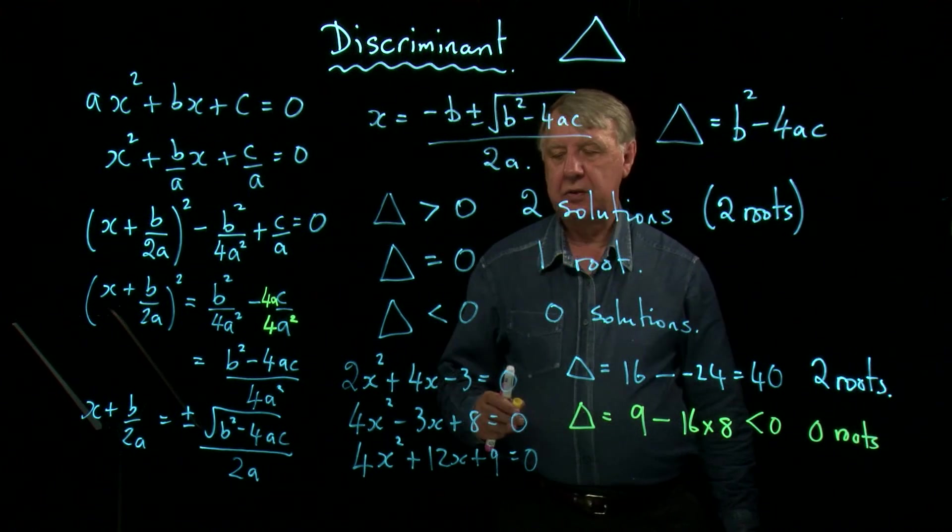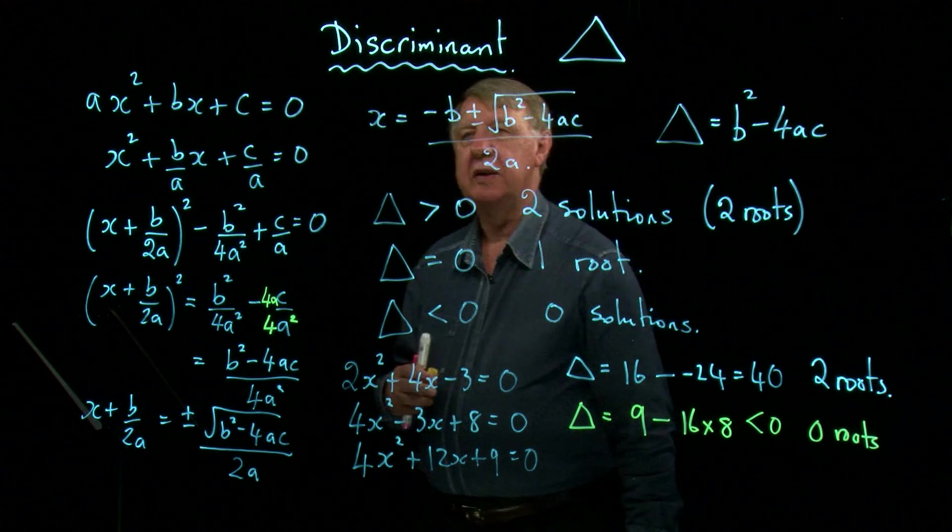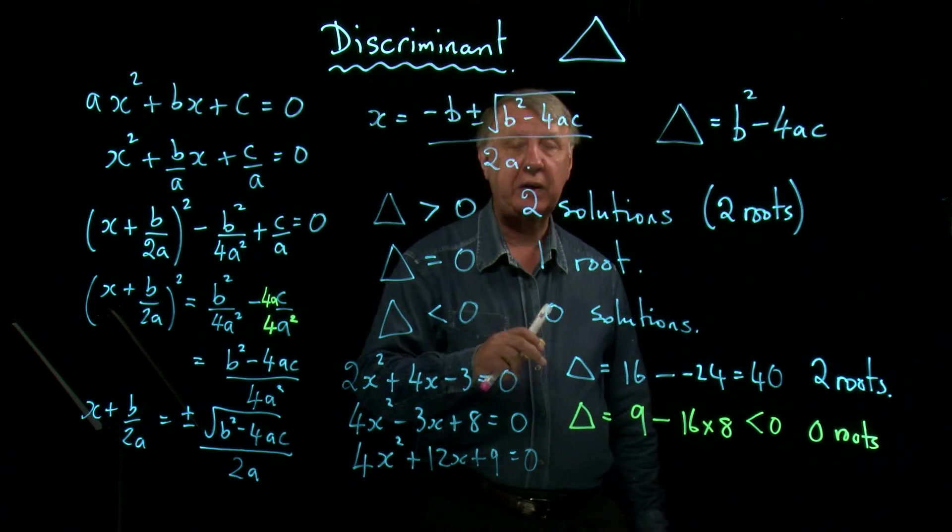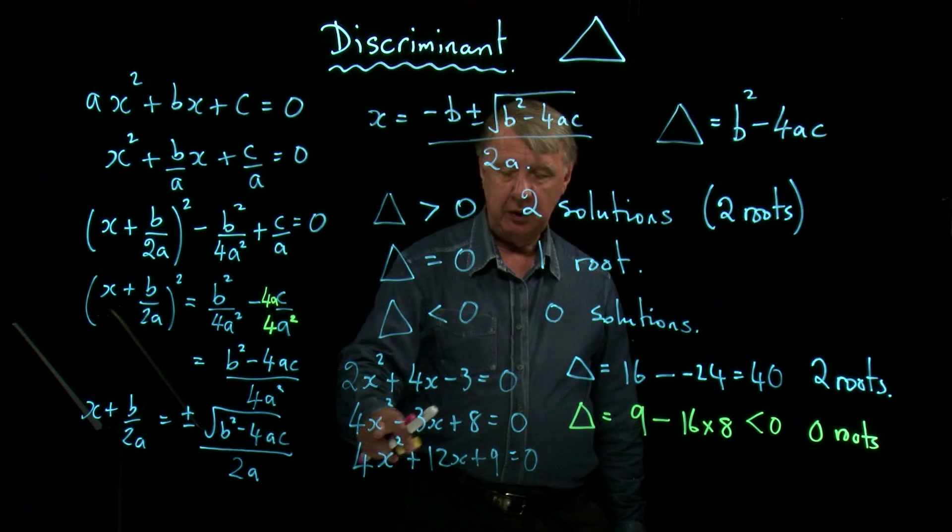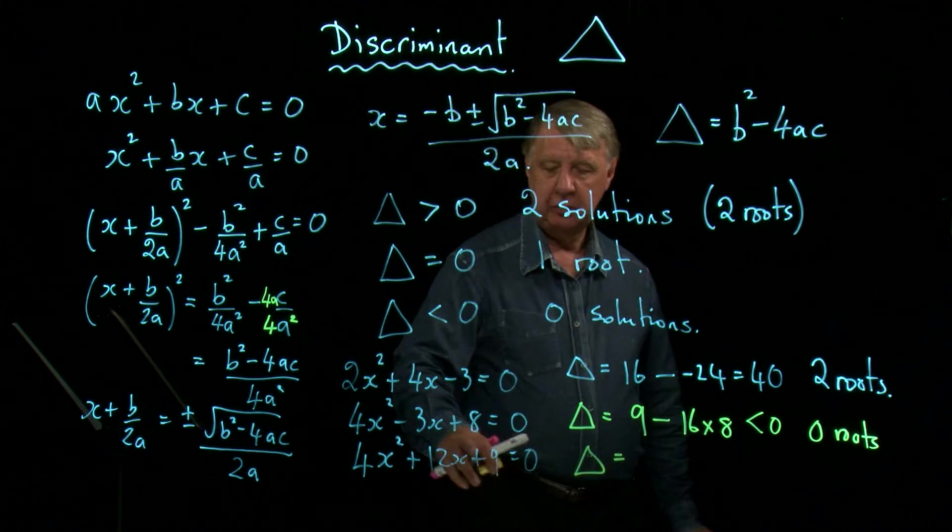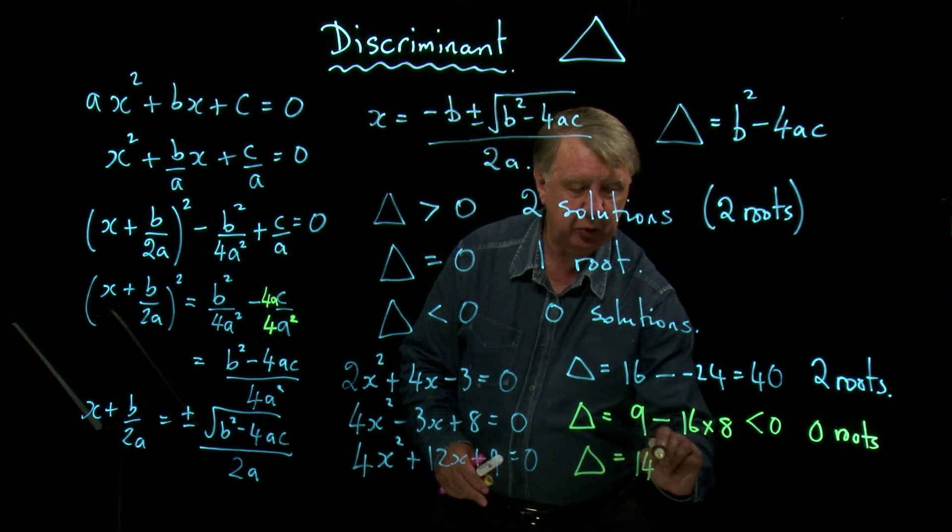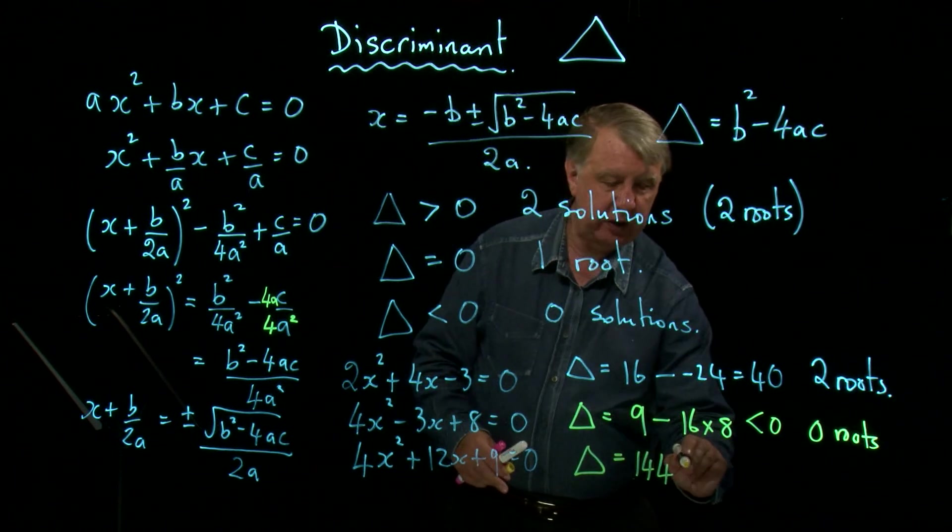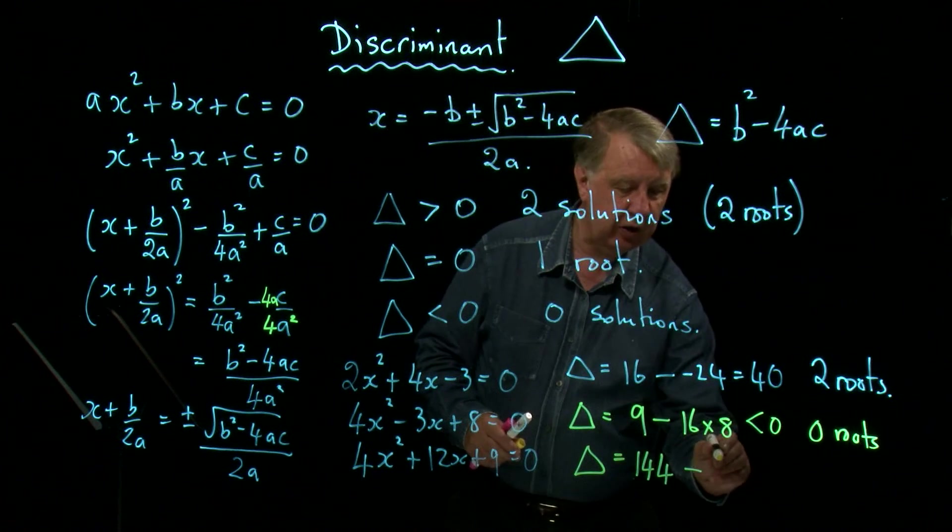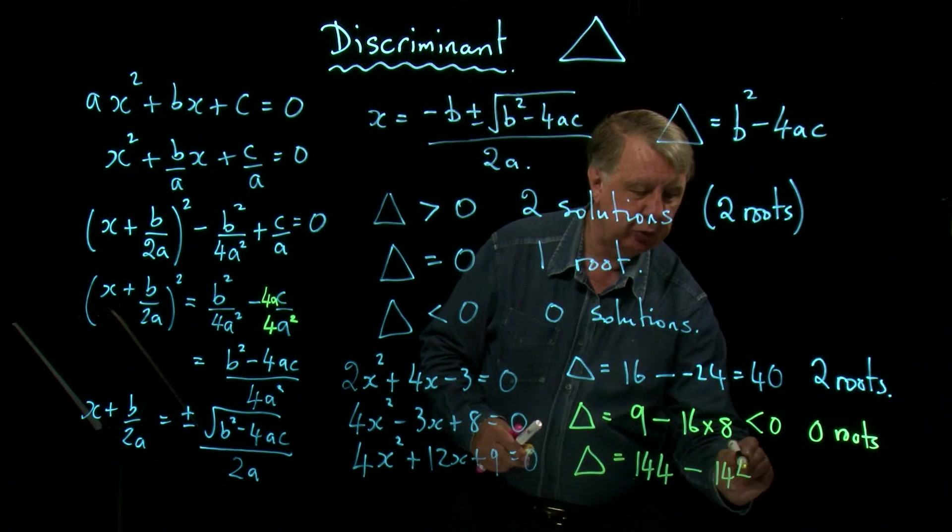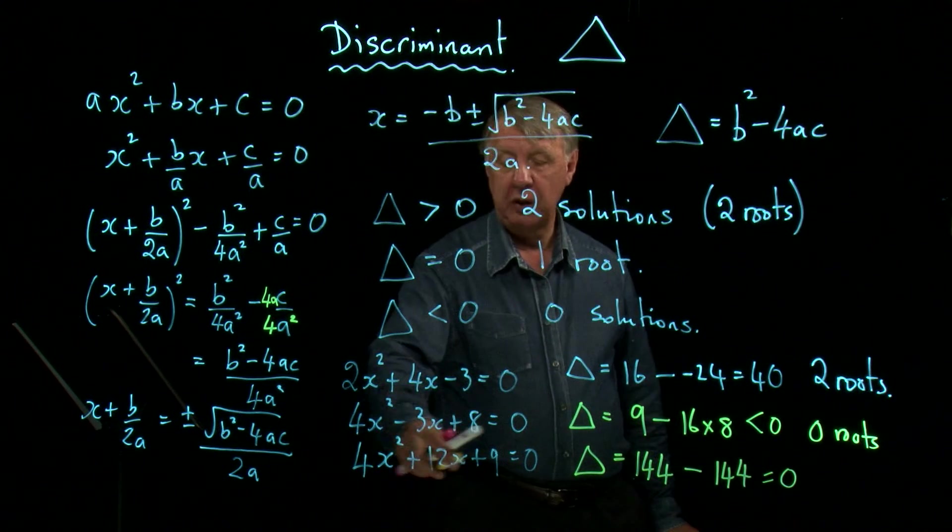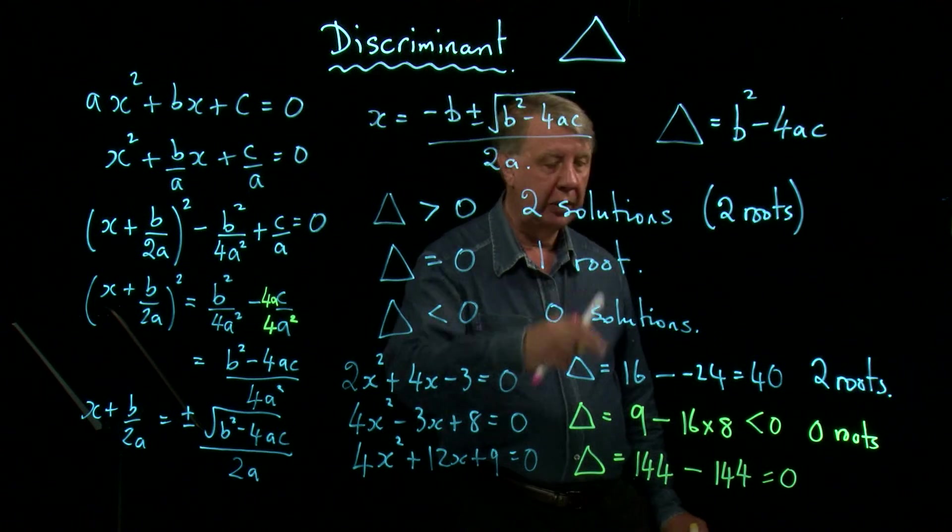So I can look at that. I saved myself a lot of time trying to find them. Well, I wouldn't have found any roots, would I? So I can determine quickly there are no solutions. And then finally, let's look at this one here. b squared. 12 squared is 144. Minus 4 times 4 is 16. 16 times 9 is also 144. The discriminant is 0.